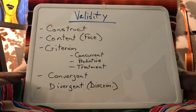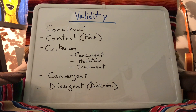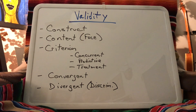With divergent validity — sometimes called discriminant validity — we'd want the opposite. If I've created a happiness test, I might compare it to a well-established depression measure, because we'd expect a negative relationship between happiness and depression. I'd give you both tests, enter the data, run a correlation analysis, and expect a negative correlation. That covers the main types of validity — let me know if you have any questions.